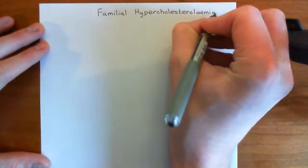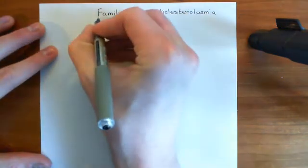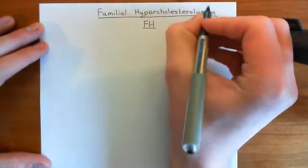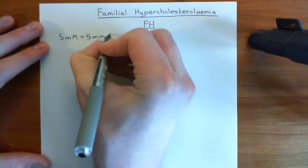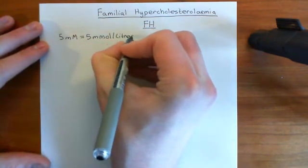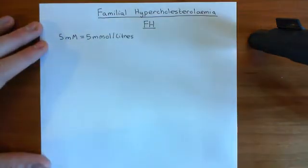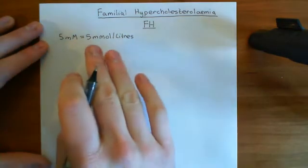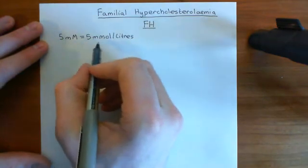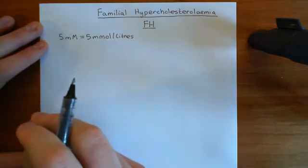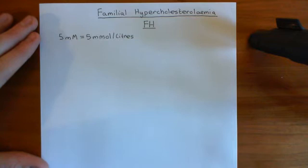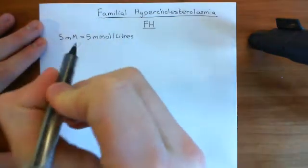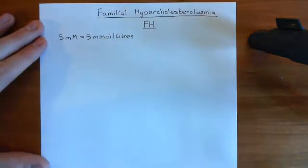Familial hypercholesterolemia, often abbreviated just to FH for short. The normal blood cholesterol level is around 5 millimolar, which means 5 millimoles per litre. Now that was the old number — it's gradually coming down, it's more around 3 now as the best optimal level. This refers to the actual amount of cholesterol within your blood, not the number of low-density lipoproteins. You've basically taken the blood out, homogenized it down, and then assayed the concentration of cholesterol. It's the total concentration of cholesterol molecules, rather than the concentration of lipoprotein molecules.